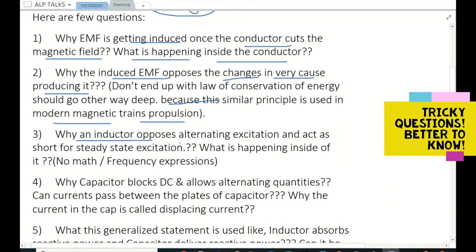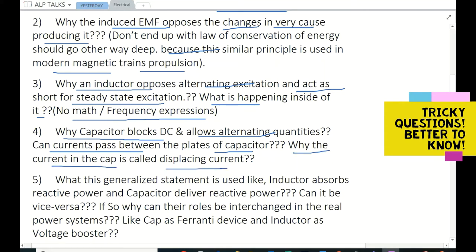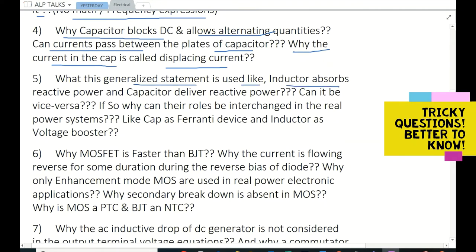Why does an inductor oppose alternating excitation and act as a short for steady state excitation? What is happening inside it? No math or frequency expression, simple way you can explain it. Why does capacitor block DC and allow alternating quantities? Can current pass between the plates of capacitor? Why is the current in the capacitor called displacing current? Why is this generalized statement used like inductor absorbs reactive power and capacitor delivers reactive power? Can it be vice versa? So why can their roles be interchanged in real power systems? Like capacitor as a Ferranti device, inductor as a Ferranti device, inductor as a voltage booster?